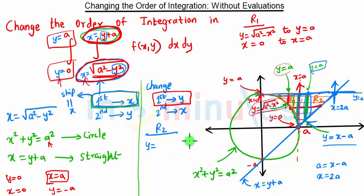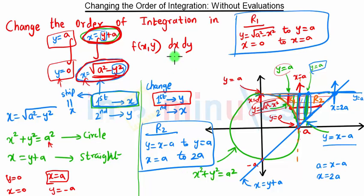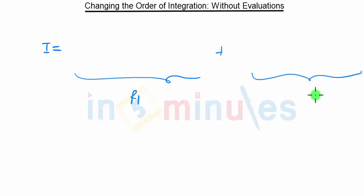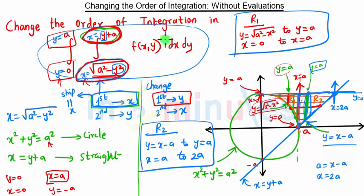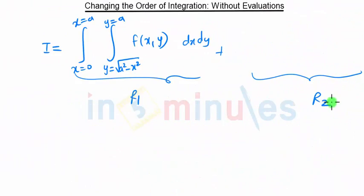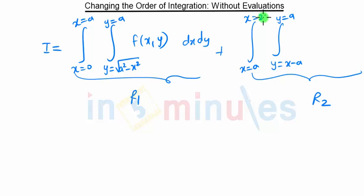Region R2 has limits: y going from x minus a to y equal to a, and x going from a to 2a. These are our new limits. After changing the order, the integration becomes two integrations — one for region R1 and one for region R2. For R1: y from √(a² - x²) to a, x from 0 to a, integrating f(x, y) dx dy. For R2: y from x minus a to a, x from a to 2a, with the same integrand.